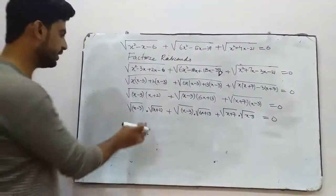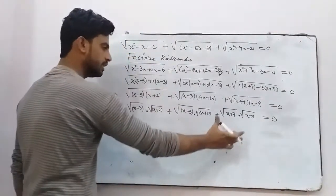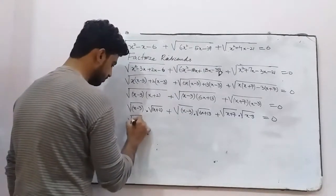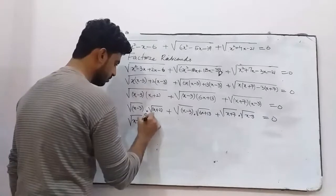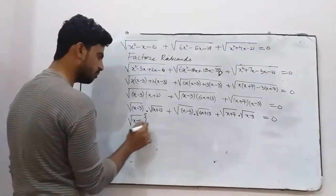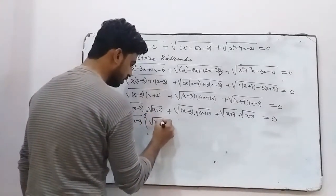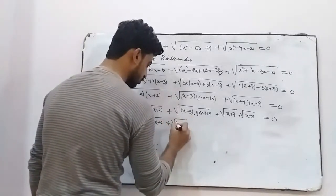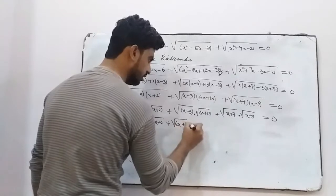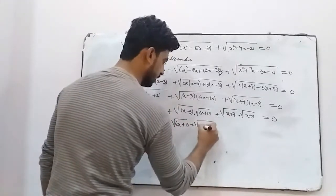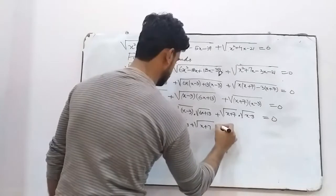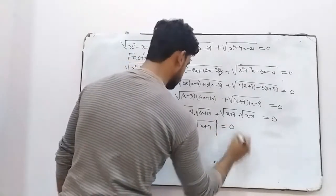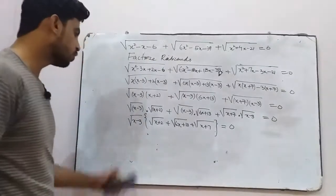We can see x minus 3 appears in all three terms, so take it as the common factor. x minus 3 taken common; here remains square root of x plus 2.